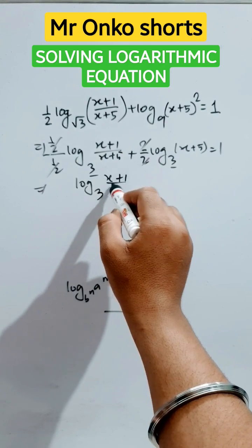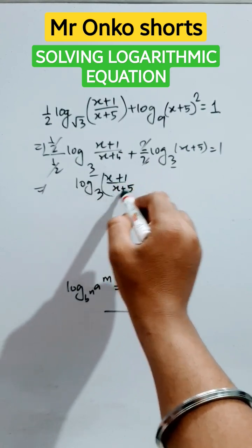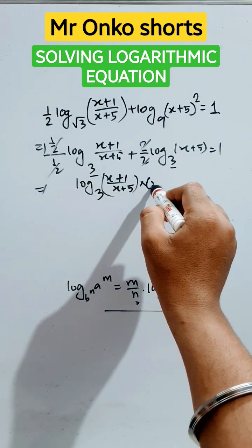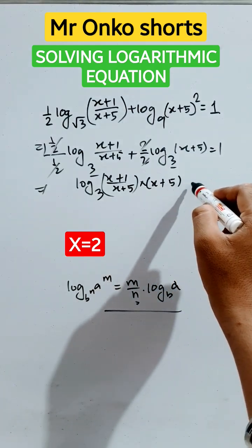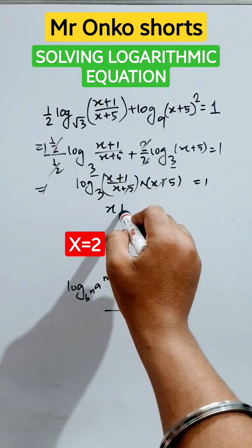The property is multiplication of logarithm. It is logarithm of this into this equals 1. This is gone, so x plus 1 equals 3.